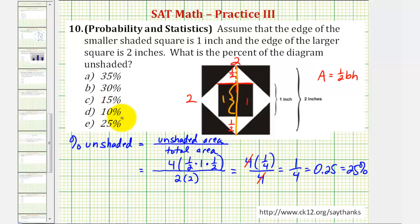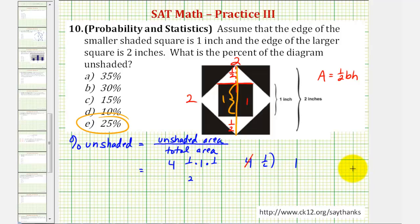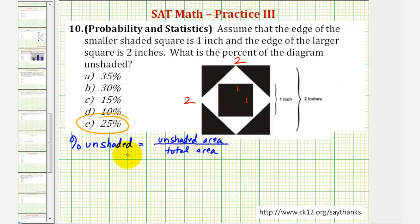But we do want this as a percentage, so one divided by four would give us 0.25, which as a percent would be twenty-five percent. So our answer is E, twenty-five percent. Let's also discuss another way that we can find this percentage. Of course we still want the unshaded area divided by the total area, and the total area is still going to be the area of the two by two square, so the total area will be two times two. Now to find the unshaded area, let's use some trigonometry this time.